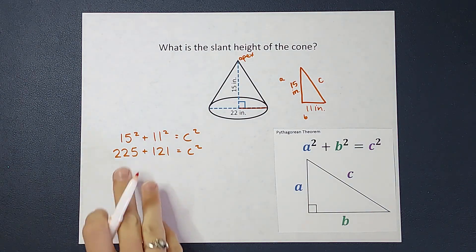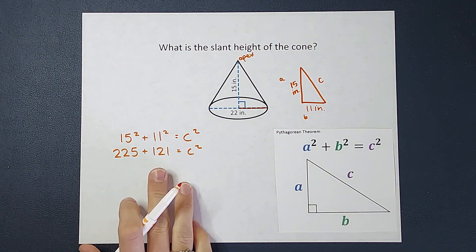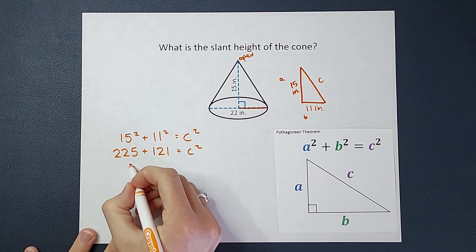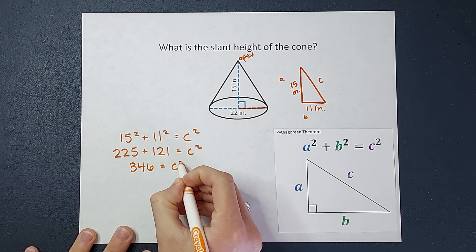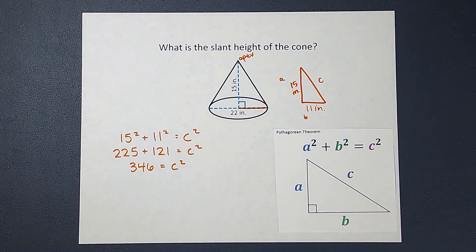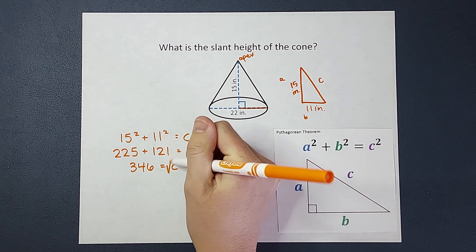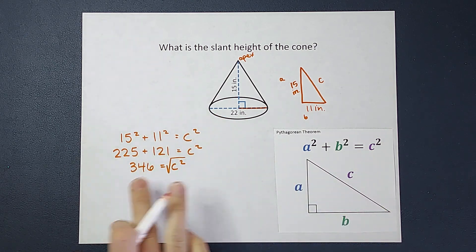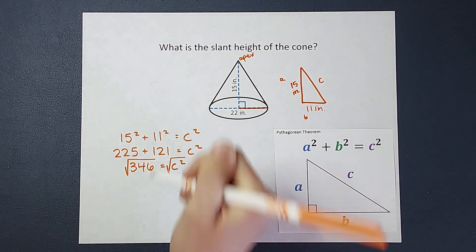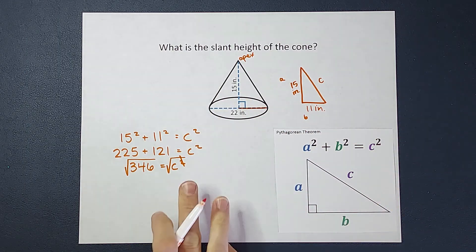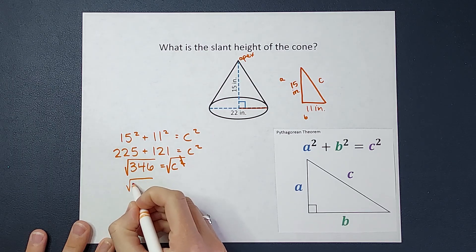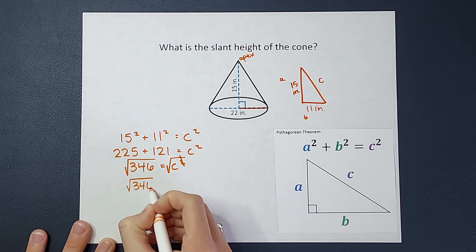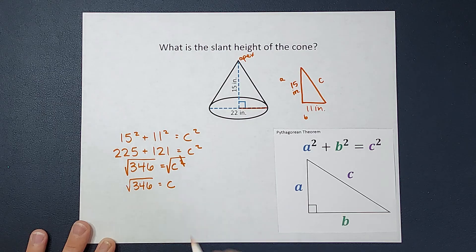As I continue to work down, 225 plus 121 is 346, and that is equal to c squared. Now I don't want my c to be squared. So to get rid of that, I am going to take the square root. If I do it to this side, I got to do it to the other side. Those cancel, so over here I'm just left with c, and on this side I'm left with the not so pretty number of the square root of 346.